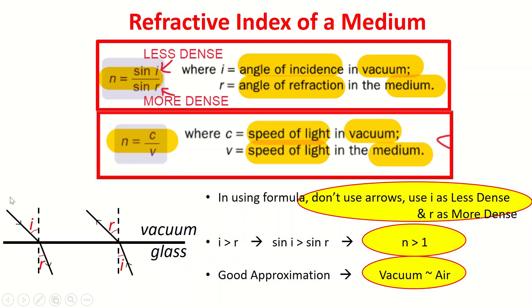So in this case if I were to solve it this way my refractive index is sine i over sine r, correct, because my i is in the vacuum which is less dense medium. But in this case can you guess what's the formula?